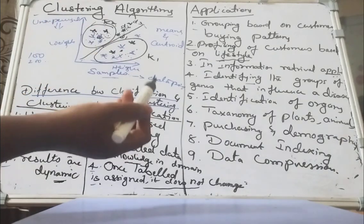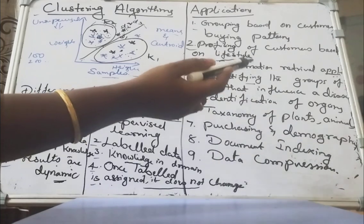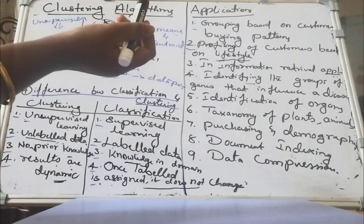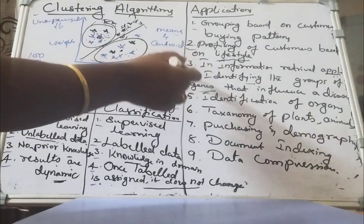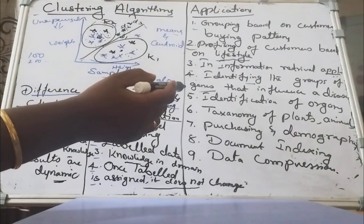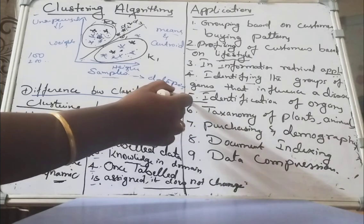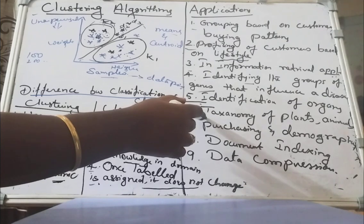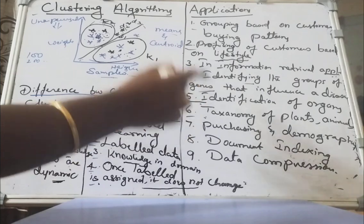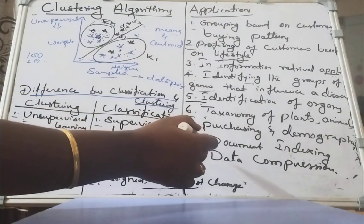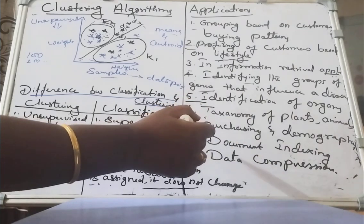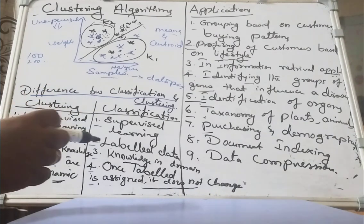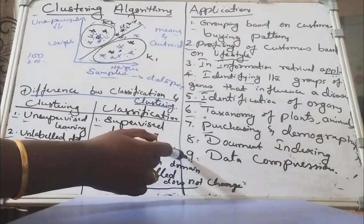In information retrieval applications — retrieval of documents from a collection of documents — we can make use of clustering. Also, identifying groups of genes that influence a disease, such as whether a person has a cancerous disease, to identify the type of genes. In DNA analysis we also make use of clustering algorithms. Identification of organs with similar physiological functions, taxonomy of plants and animals in biology and zoology — clustering is used for classifying taxonomy. Clustering based on purchasing behavior and demography, documenting and indexing, data compression by grouping similar objects, and finding duplicate objects in a given sample of documents are also applications of clustering.